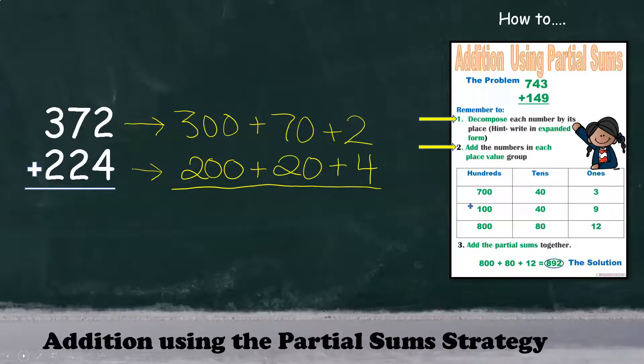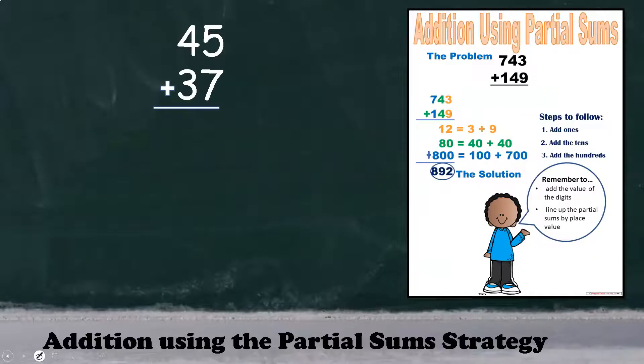Moving on to step two, we're ready to add each place value group. Starting with the ones, four plus two, six. Seven tens plus two tens is 90. Step three, we're going to go ahead and add up our partial sums, leaving us with 596.